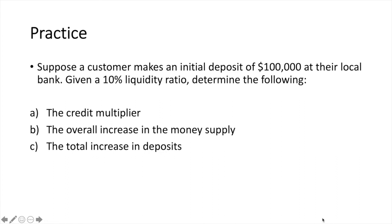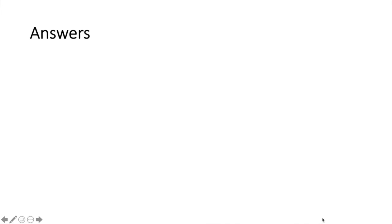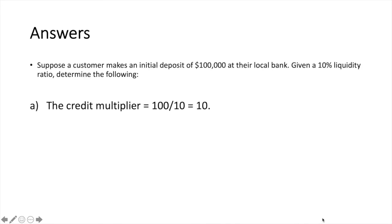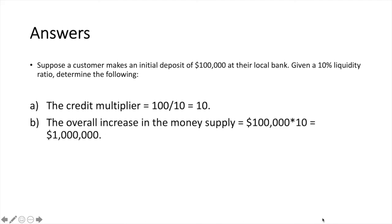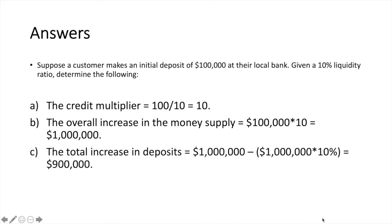Practice this question — pause the video and I'll review the solution in a few seconds. Suppose a customer makes an initial deposit of $100,000 at their local bank. Given a 10% liquidity ratio, determine the following. The credit multiplier is equal to 100 divided by 10, which equals 10. The overall increase in the money supply is equal to $100,000 times 10, which equals $1,000,000. The total increase in deposits equals $1,000,000 minus 10% of that figure, which equals $900,000.